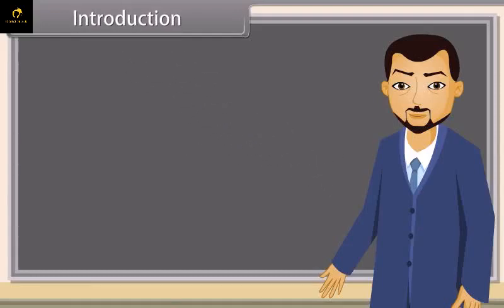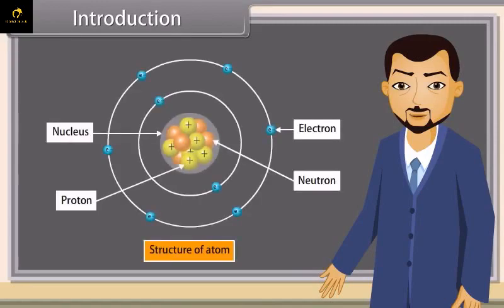Today, I will teach you the topic: structure of the atom. Atoms are the fundamental units of matter. Everything around us is made up of atoms. A typical atom consists of a nucleus of protons and neutrons, with electrons orbiting this nucleus.